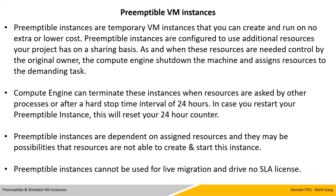In case you restart your permittable instance, this will reset your 24-hour counter. That means either you restart your machine, it will reinitiate the counter of 24 hours, or when resources are demanded back by the original instances, this machine can go down, or after the interval of 24 hours GCP shuts down these machines. Permittable instances depend on assigned resources and there may be a possibility that resources are not available to create and start the machine. Permittable instances cannot be used for live migrations and carry no SLA — that means you can't claim anything to Google in case these machines go down.